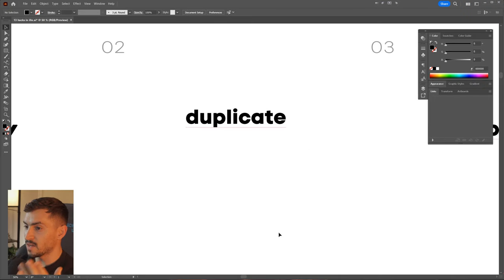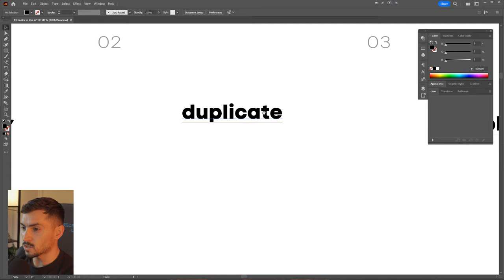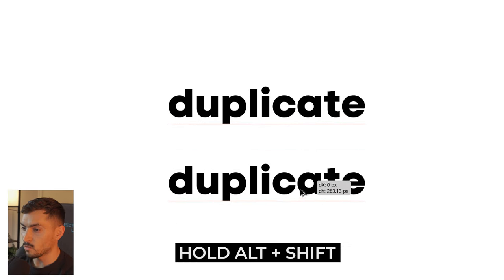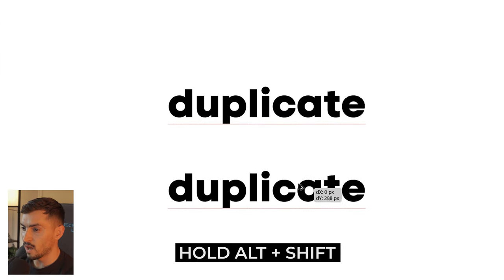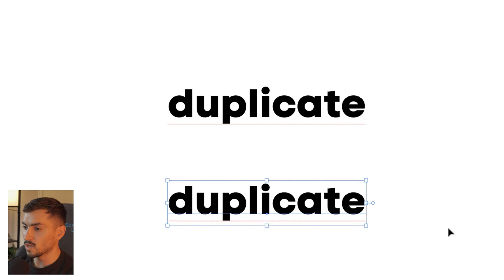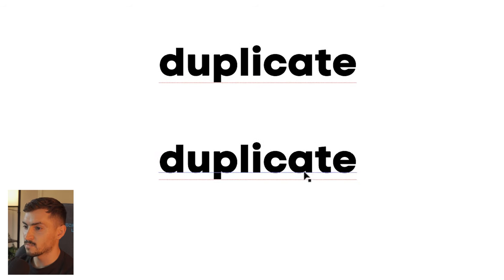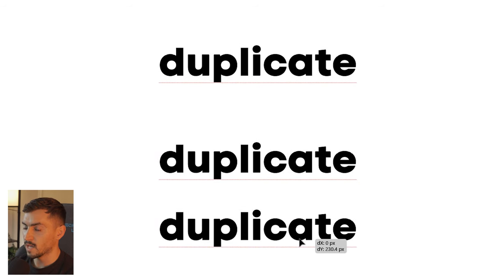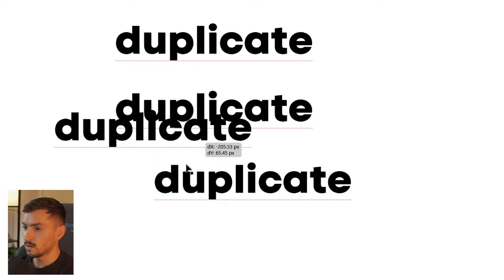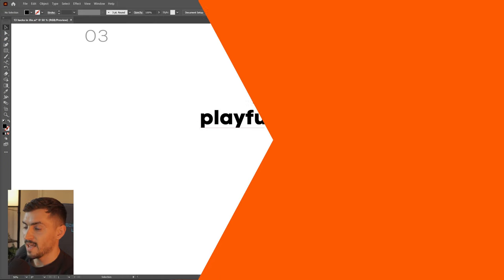Number two is fast duplication. All you've got to do is select your object or font and hold alt. If you hold shift it will keep it in line at a 90 degree angle and then once you let go it duplicates the text. If you just hold alt then it will just duplicate like this.